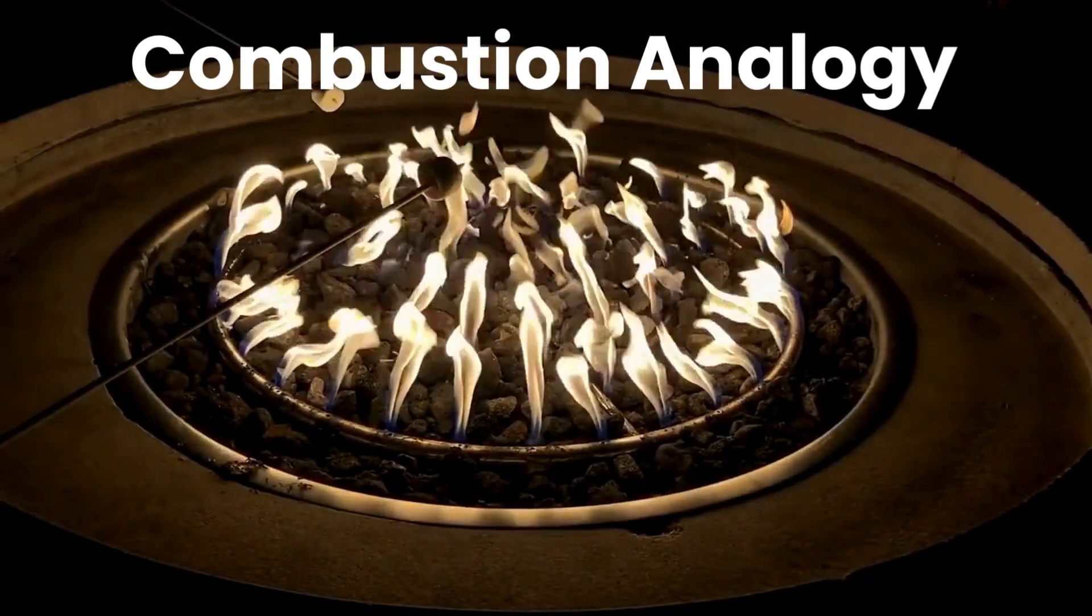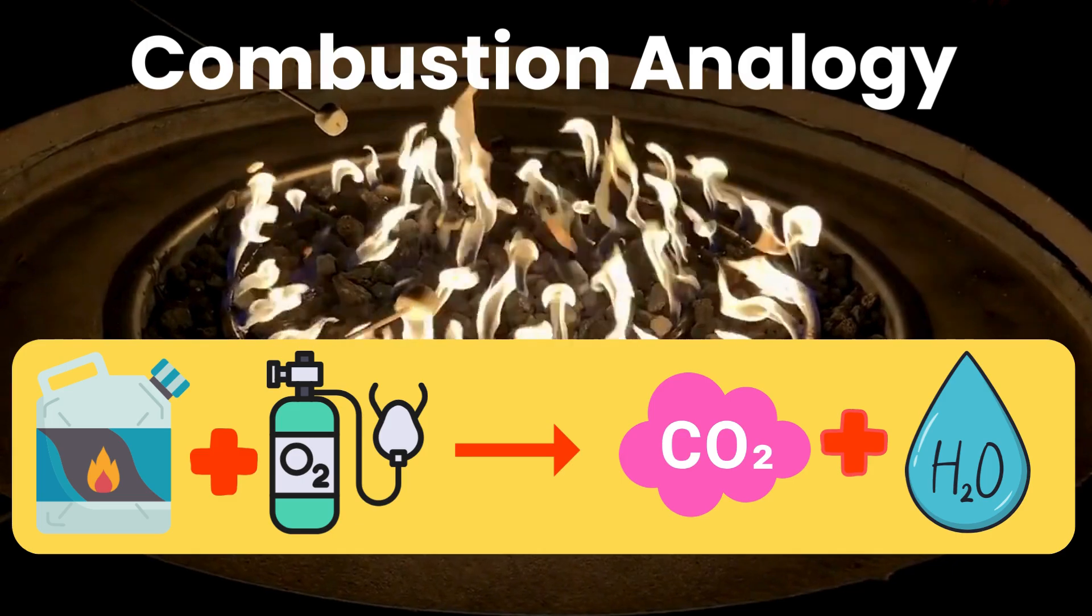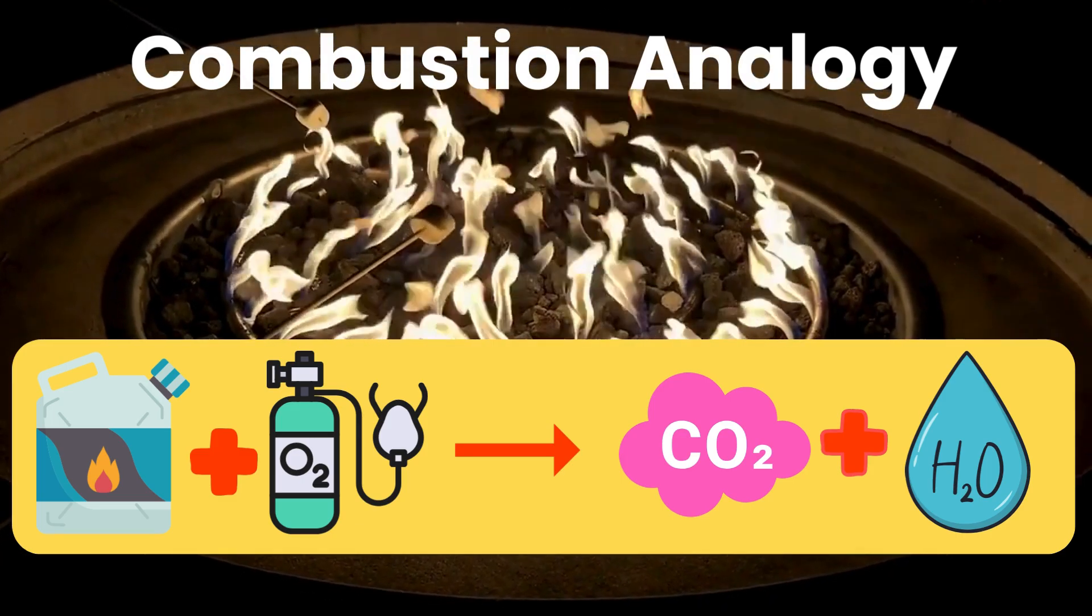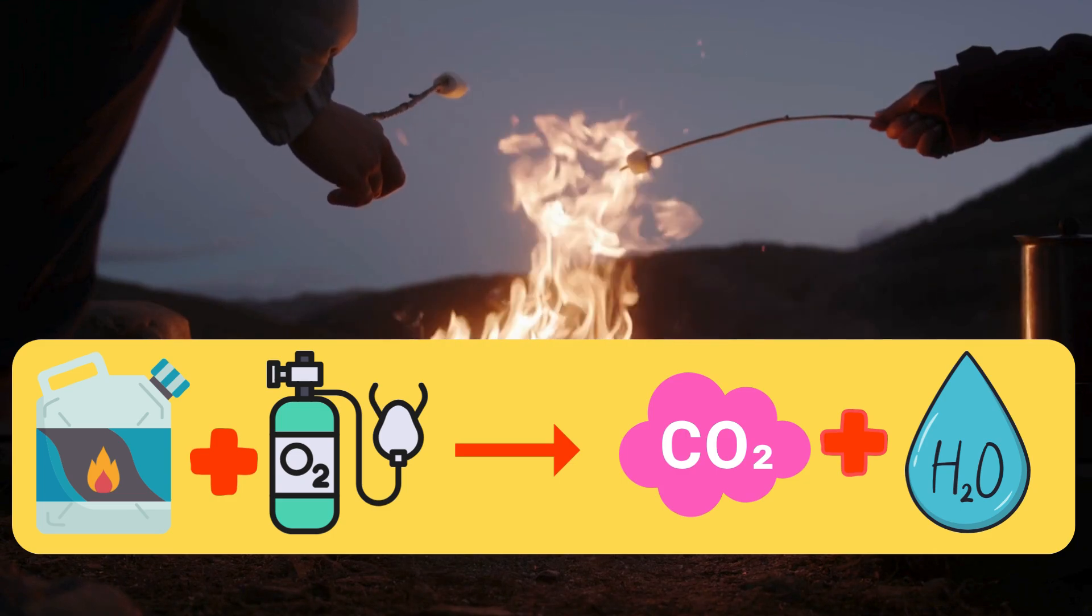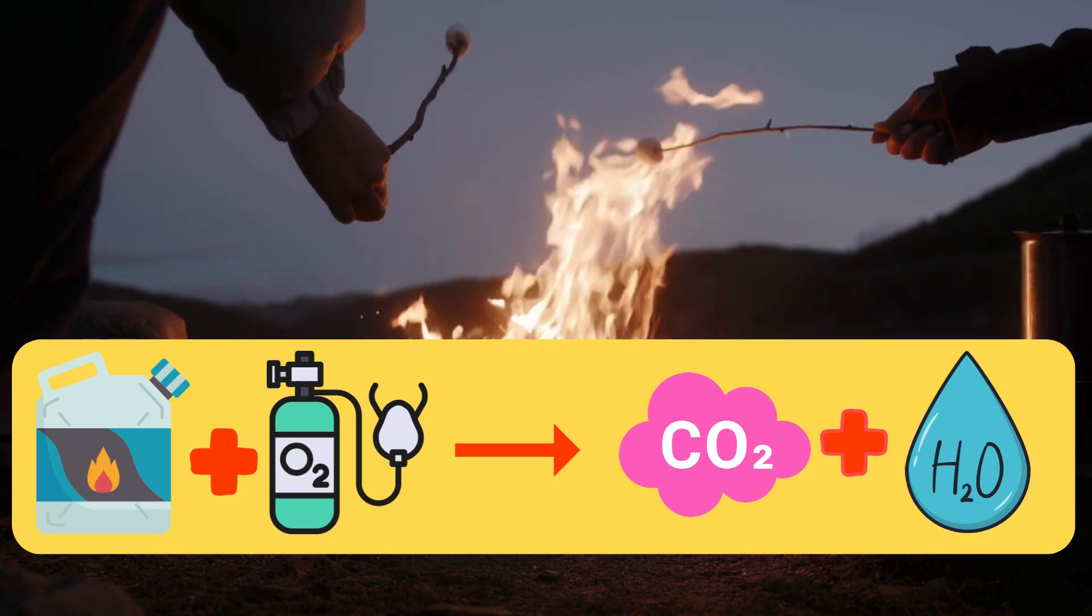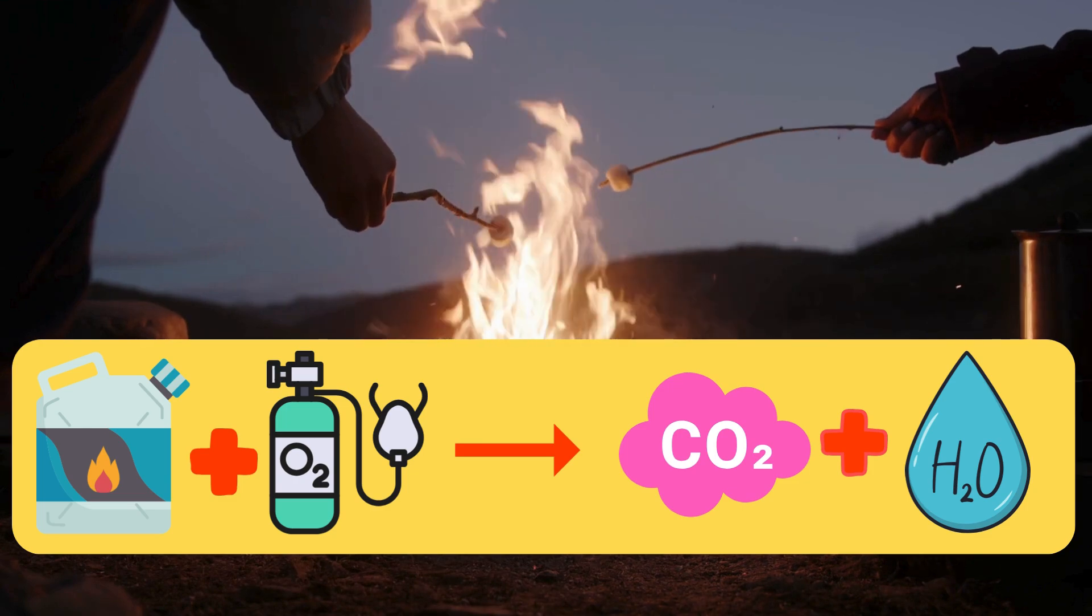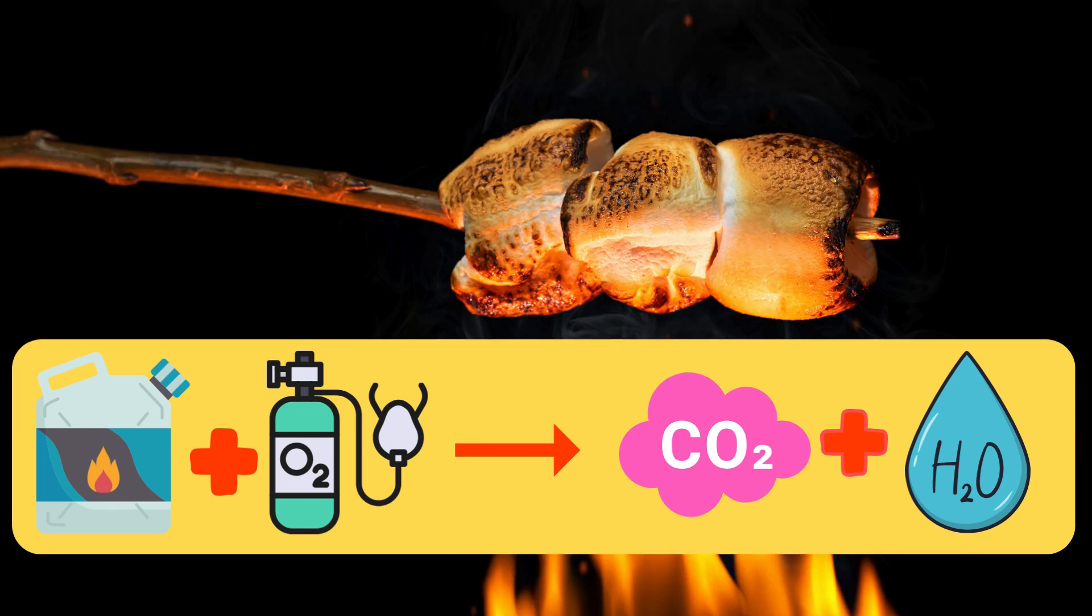Combustion analogy. Let's use the analogy of roasting a marshmallow over a fire to represent combustion. The marshmallow represents a hydrocarbon compound. The oxygen from the air reacts with the marshmallow during the combustion. Carbon dioxide and water vapor are produced. Heat is released during the combustion process, which causes a marshmallow to heat up, melt and potentially brown or char on the outside.